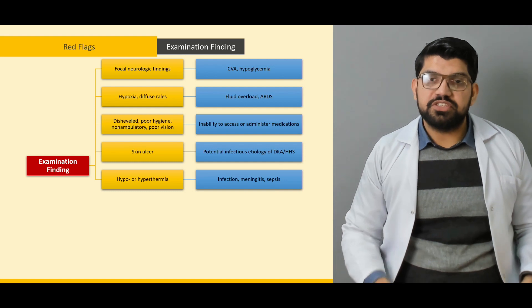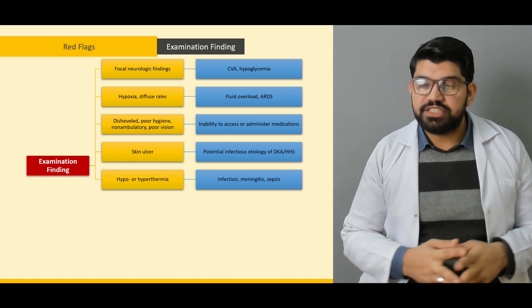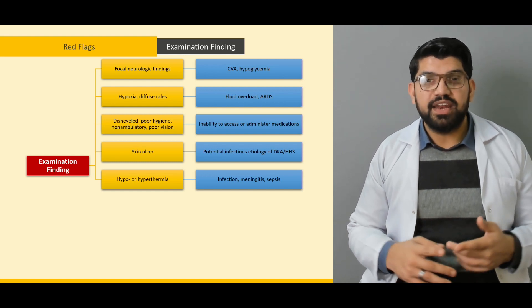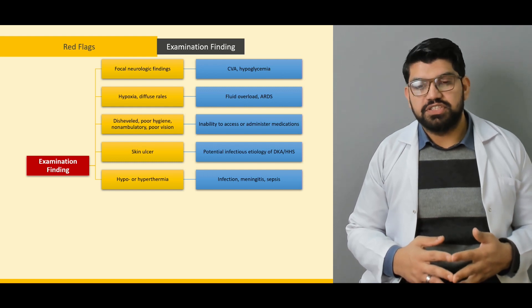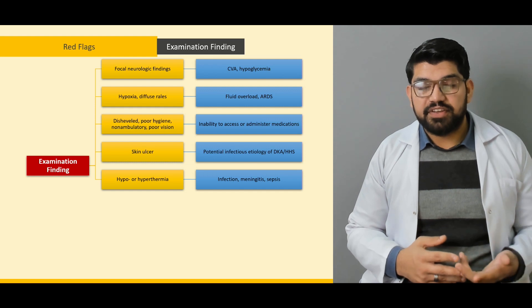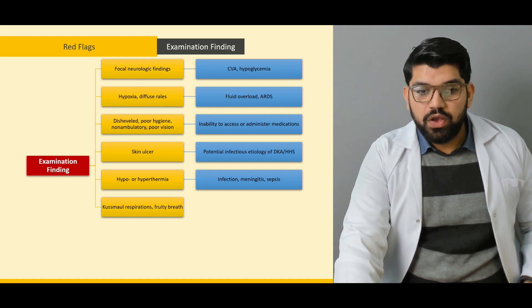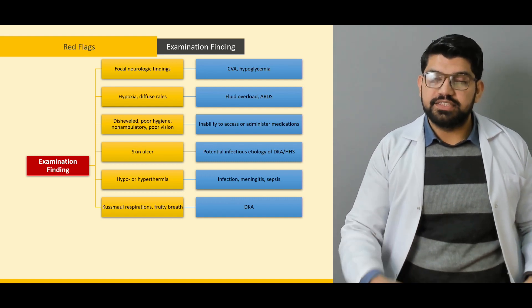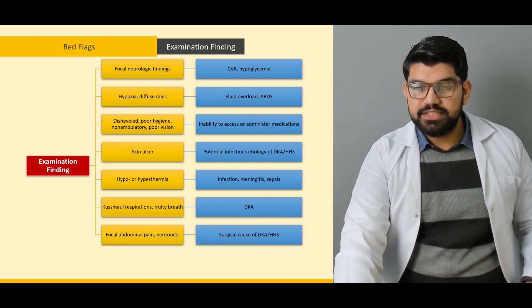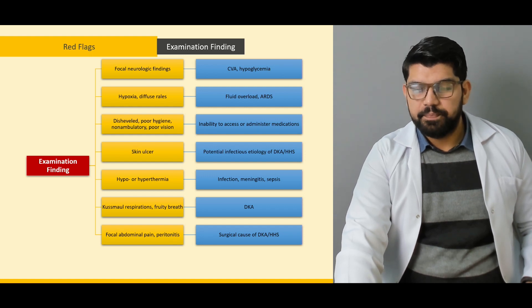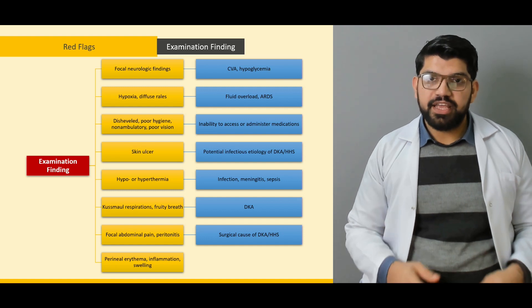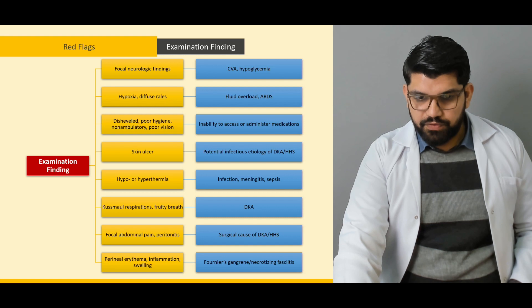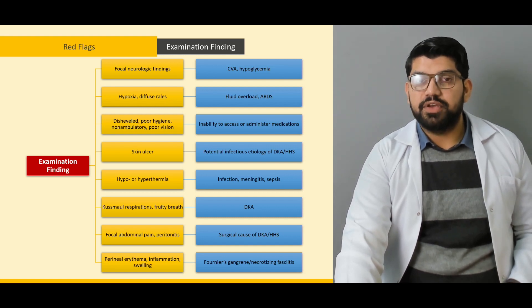Hypothermia and hyperthermia — infection, meningitis, and sepsis. Diabetic patients are prone to recurrent and lethal infections, such as infections of diabetic foot, mesenteric ischemia, sepsis, and meningitis. Kussmaul respirations and fruity breath are signs of diabetic ketoacidosis. Focal abdominal pain and peritonitis are surgical causes of DKA and hyperosmolar hyperglycemic state. Periorbital swelling and inflammation are signs of infection. Fournier's gangrene and necrotizing fasciitis are examples of complications in patients with diabetes.